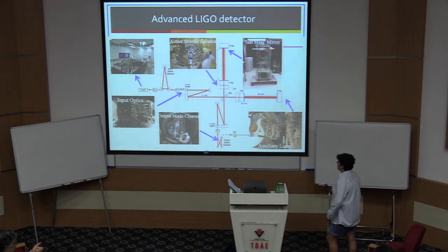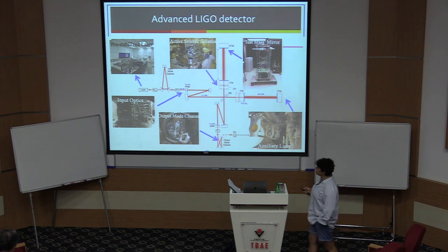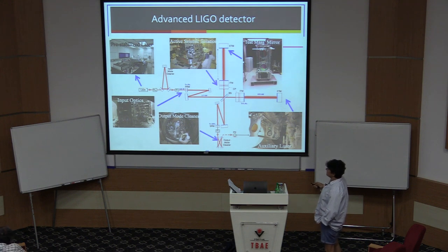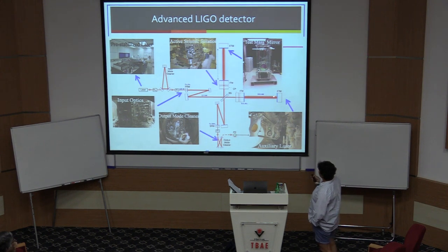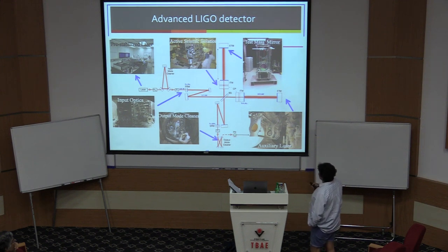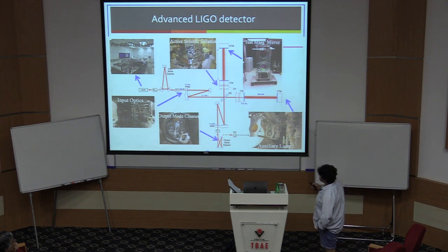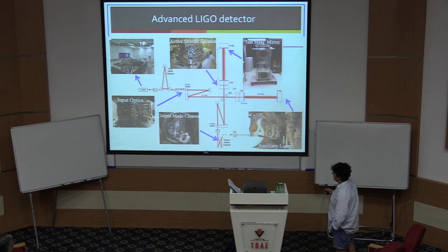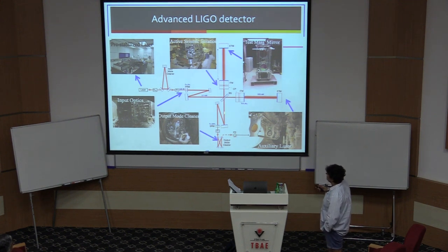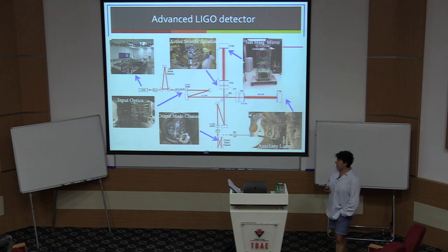Here is a layout of the LIGO interferometers with a few details you should feel more comfortable seeing now. The laser is at the input, there's a bunch of optical cavities to clean up the light, and the power recycling cavity is formed by the mirror and the beam splitter. Two Fabry-Perot cavities are in the arms. The four mirrors of the two Fabry-Pearls are isolated with an active seismic isolation system using feedback control, and then a passive isolation system which is a chain of pendulums. At the output is where we make the measurement, and the signal recycling mirror sends signal photons back in to gather more phase.